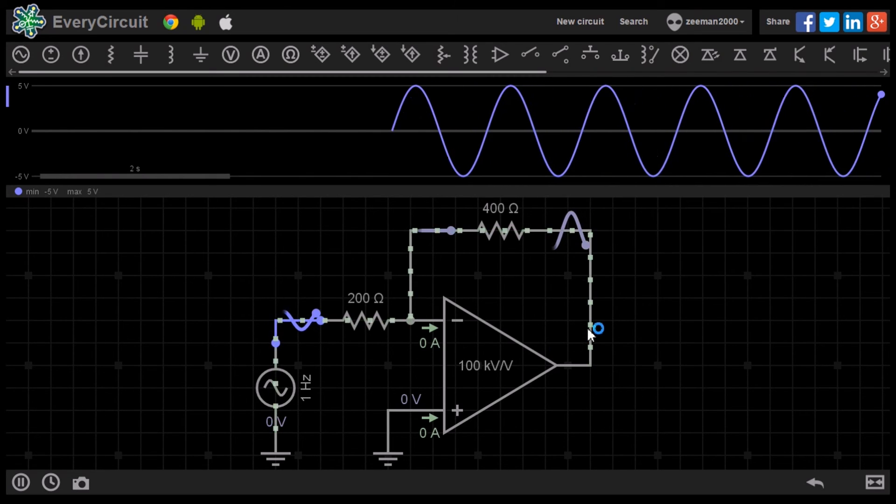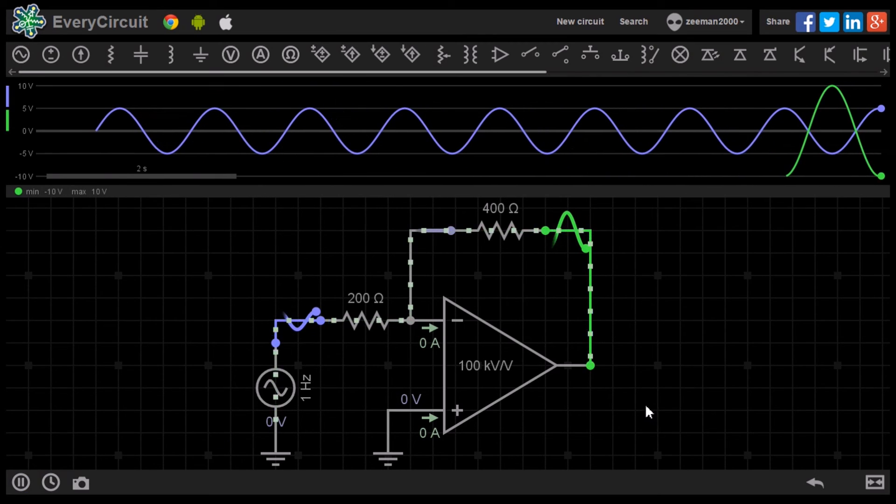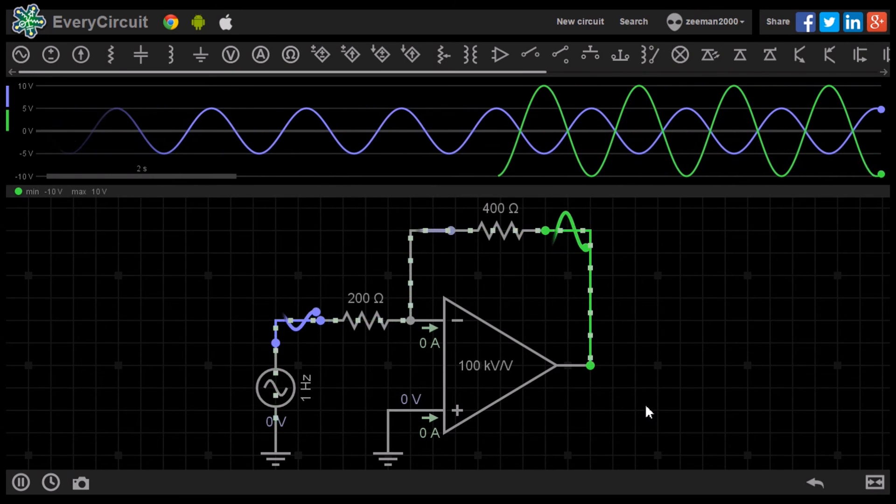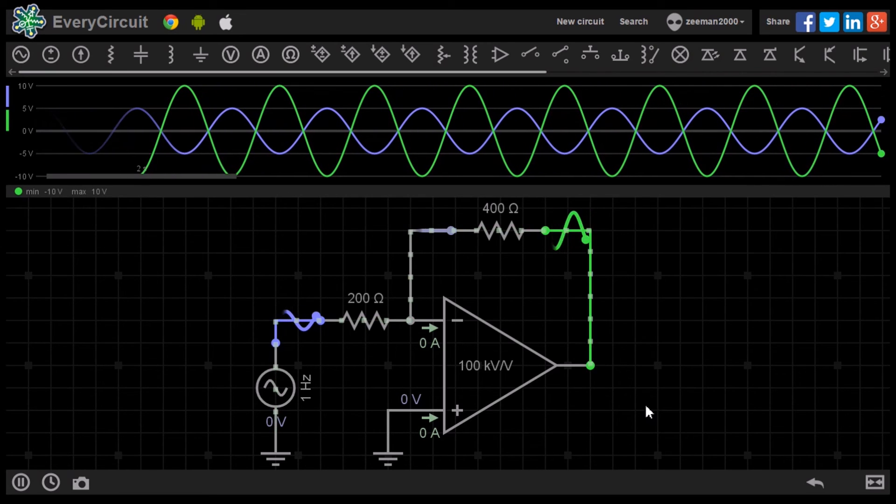Let's now highlight the output and look at how the signal has changed. As we predicted with our formula we have amplified the output voltage to 20 volts peak to peak.